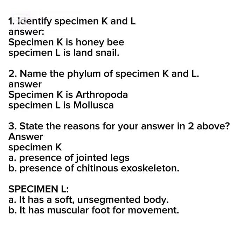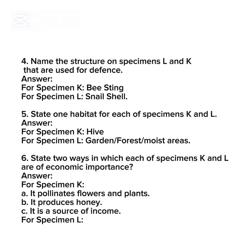Question four: name the structure on Specimen L and K that are used for defense. Answer: for Specimen K it is the bee sting; for Specimen L it is the snail shell. Question five: state one habitat for each of Specimens K and L — Specimen K lives in a hive; Specimen L lives in the garden or forest. Question six: state two ways in which Specimens K and L are of economic importance — Specimen K pollinates flowers and plants, produces honey, and is a source of income.